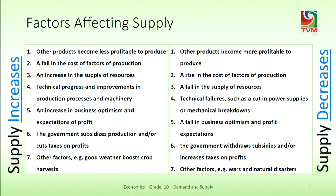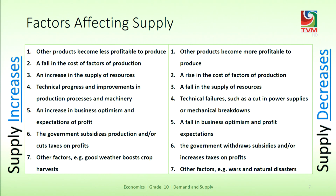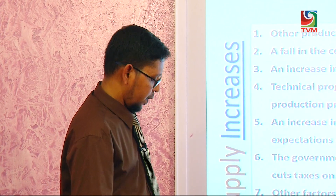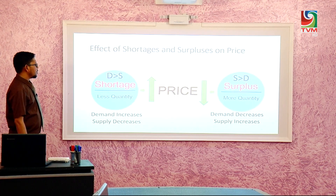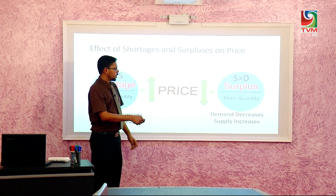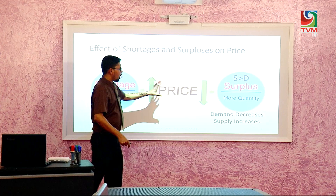Let us see some of the factors that would increase the supply and some of the factors that would decrease the supply. Once again you can have this written on your own paper — write it yourself, do not just have a printed copy. Now let us see the difference between the shortage and the surplus. This is very important in demand and supply because shortages and surpluses affect the price.